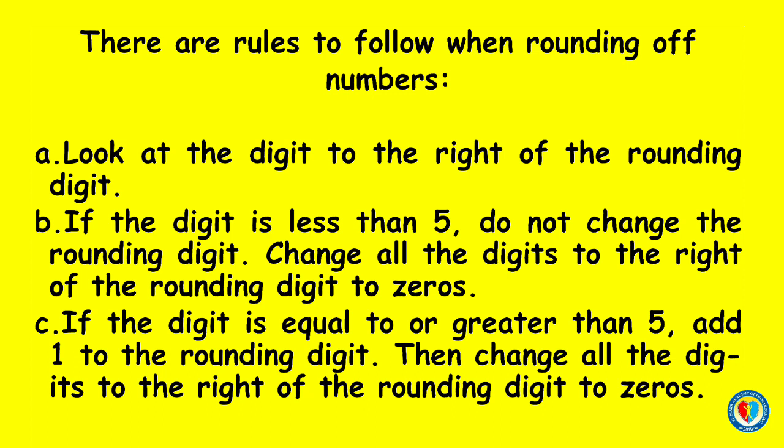Next, if the digit is less than 5, do not change the rounding digit. Change all the digits to the right of the rounding digit to zeros.